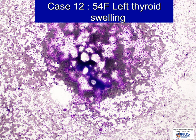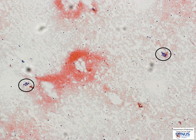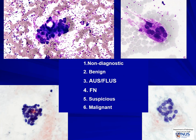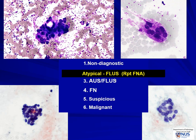I want to highlight one case: a 54-year-old lady with a left thyroid swelling. We can see that there is not much cellularity, and we really have to hunt for cells. However, there are too many to call this non-diagnostic — the cutoff is about six groups of 10 cells each, roughly 60 cells for adequacy. The cells do form small, rounded, and somewhat crowded clusters, and we also have some micro follicular formations. But because there are so few cells and we are not sure whether some are artifactual due to blood clotting, it's very difficult to categorically say that this is a neoplasm. This is an example of a case that will fall into the FLUS category — in the indeterminate, atypical category in the Bethesda system — with management to repeat FNA or to offer molecular testing if available.